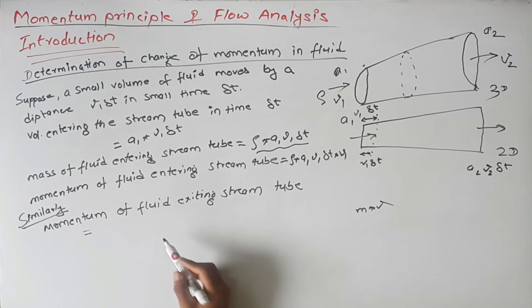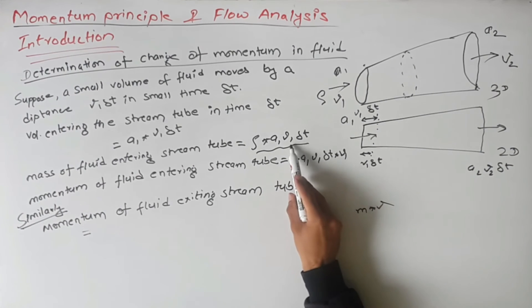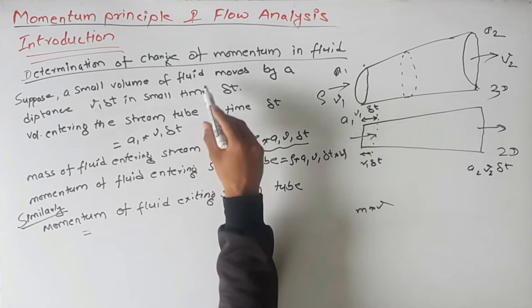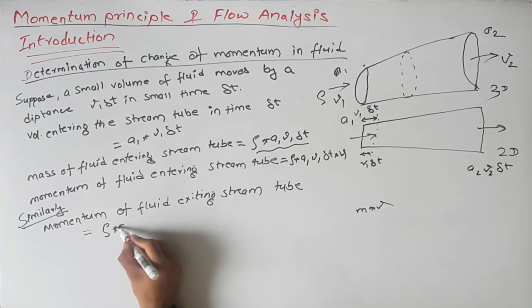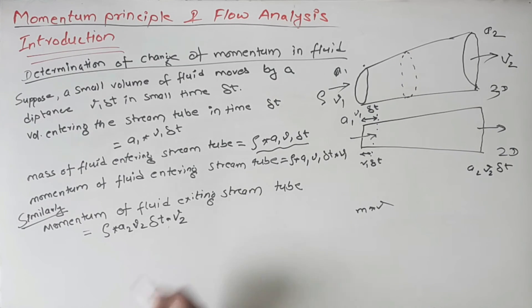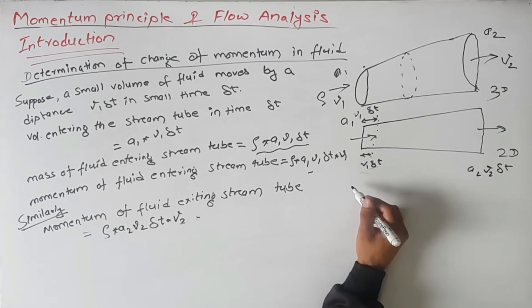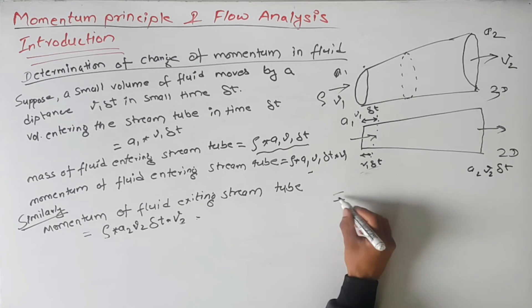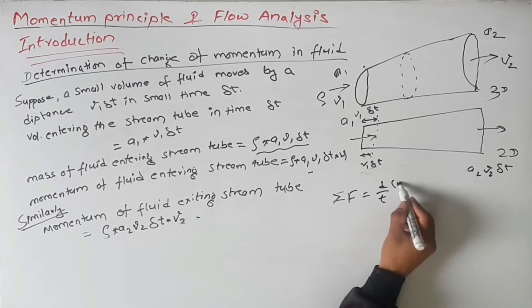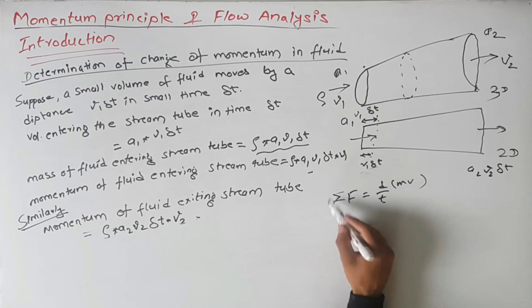The momentum of fluid exiting the stream tube equals rho × A2 × V2 × delta-t × V2. Now we can apply Newton's second law, which states that the sum of forces equals the rate of change of momentum. We have the initial momentum and the final momentum, so we apply Newton's second law.